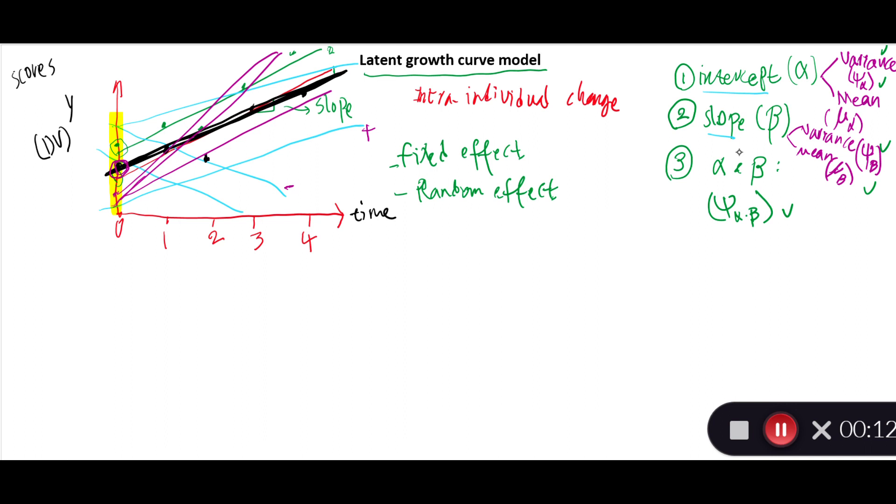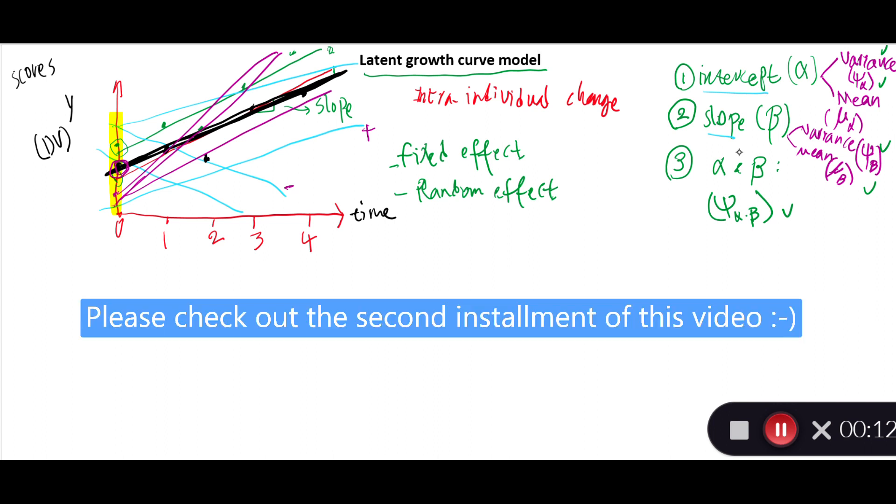I think this provides us with a brief but perhaps useful introduction to latent growth curve models. Now the question is, how do we use these concepts within the framework of structural equation modeling? Okay, so I'm going to explain that quickly in a second. But before that, let's remember that we have got several measurements here: measurement time zero, measurement time one, time two, three, and four.